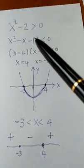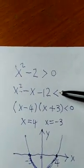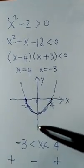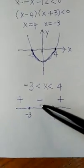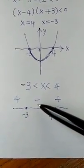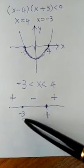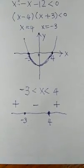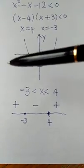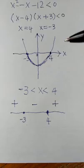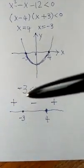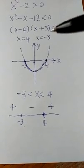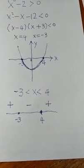Then we look at the inequality — I want negative, because it is less than zero. So go to the number line and look for the negative interval. The x values for that interval are between negative 3 and 4, so that is the answer. The shortcut is to skip sketching the function — just draw a number line and select the interval where the sign matches whether you want positive or negative.